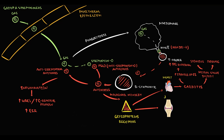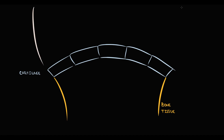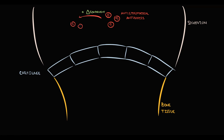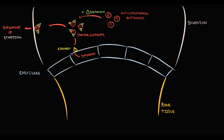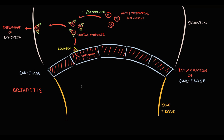The second target of antibodies are the joints, where antibodies cause arthritis — either mono- or polyarthritis. Anti-streptococcal antibodies bind some complement components, resulting in formation of immune complexes. Immune complexes are very reactive substances and can deposit on the synovium, causing synovitis. Or immune complexes can bind to collagen on the cartilage surface and induce inflammation of the cartilage. Inflammation of the cartilage and synovium is called arthritis, which can affect just one joint (monoarthritis) or multiple joints (polyarthritis).